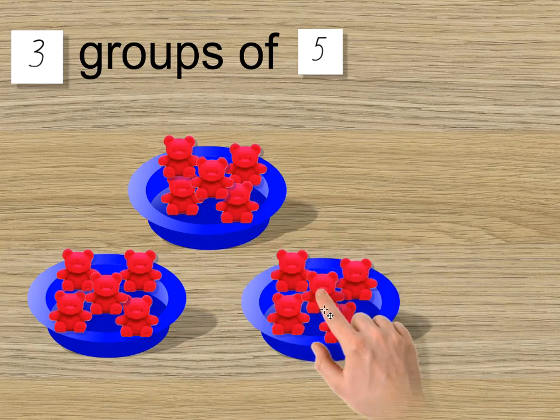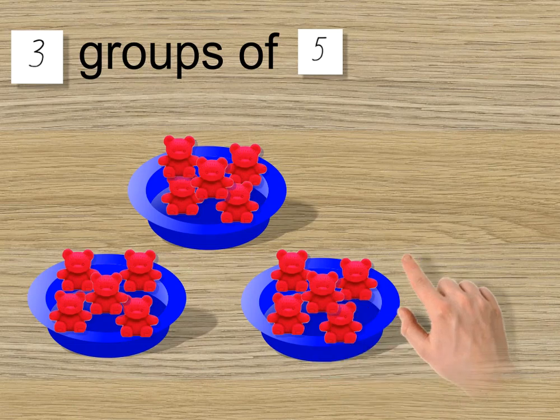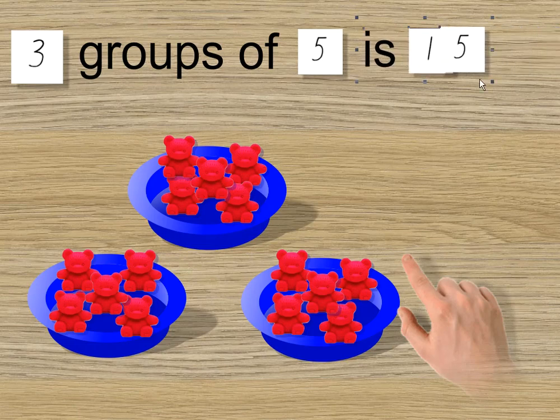Or you might even remember your multiplication facts, and know that three times five, or three multiplied by five is fifteen. Or you can phrase it the other way. Five times three, or five multiplied by three is fifteen. So let's put that in. Three groups of five is fifteen.